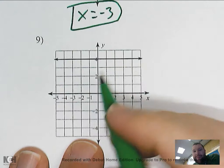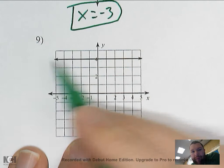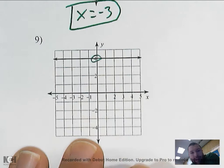This is my other special case — the horizontal line. That is when we have y equals some number, and again it's whatever the y value is.